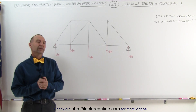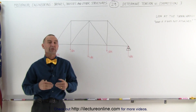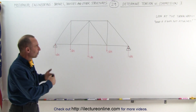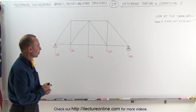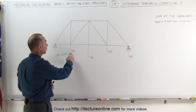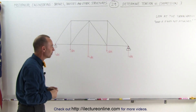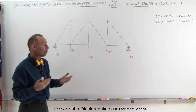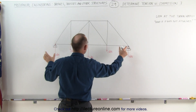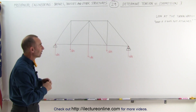Welcome to Electronline. Now let's look at a slightly more complicated structure for which we're going to find which members are under compression and which members are under tension. It is basically a simple bridge structure, supported on both ends. There's a 2 kN load here, a 2 kN load there, and a 4 kN load in the middle — a total of 8 kN. Since there's perfect symmetry, we can assume 4 kN on each side of the bridge.